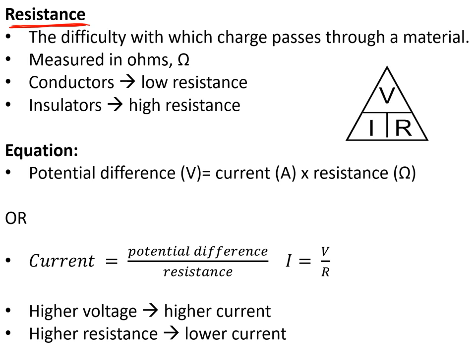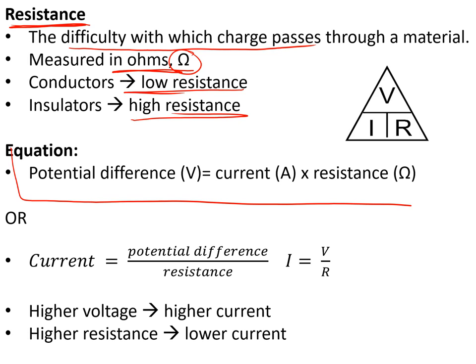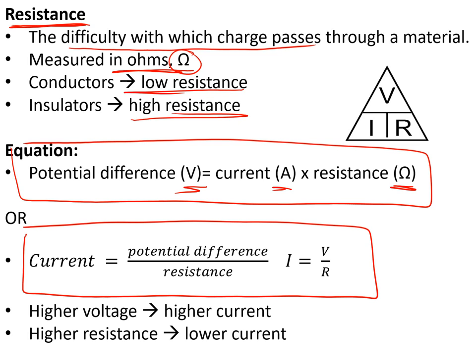Resistance is the difficulty that electricity has passing through a material, measured in ohms. Conductors have low resistance whereas insulators have high resistance. This gives us the equation: potential difference = current × resistance, V = IR. The current is bigger if the potential difference or voltage is higher, and smaller if the resistance is higher.